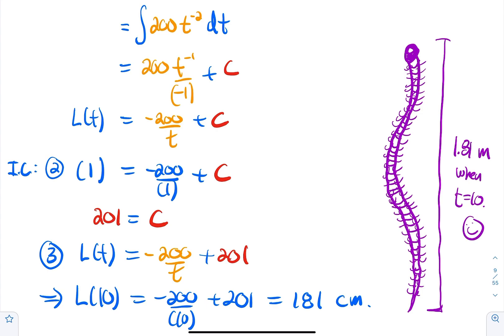To summarize the initial value problem method: integrate, plug in your value, isolate c, and find the unique antiderivative. That's it for this section — bye!